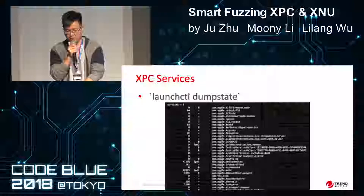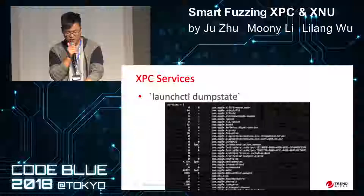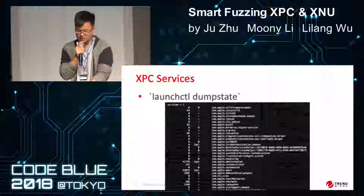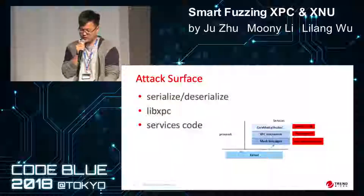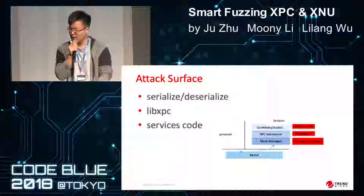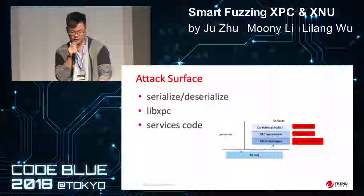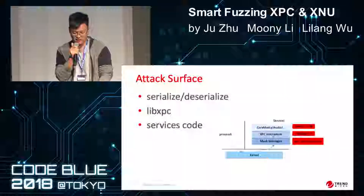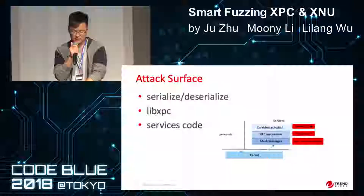Now we need to enumerate the XPC services. We all know that XPC services are managed by launchd, so we can use the launchctl dumpstate command to dump the details for each XPC service. When one XPC service process requests from other processes, it should serialize these XPC messages by the Mach message mechanism first, then use the XPC mechanism to process this XPC data. Finally, the corresponding XPC service will receive the data and complete their tasks.